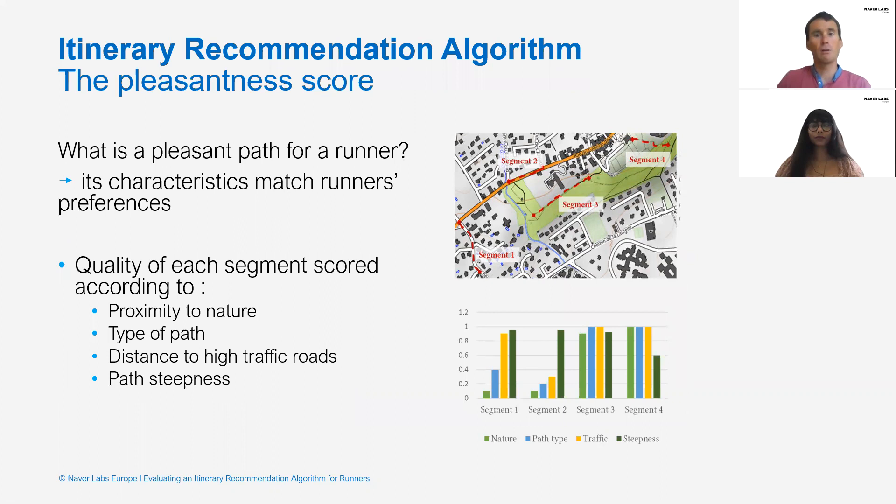Our algorithm rates each segment of the map according to these four main characteristics. Here is an example of how four segments would be rated by our algorithm.